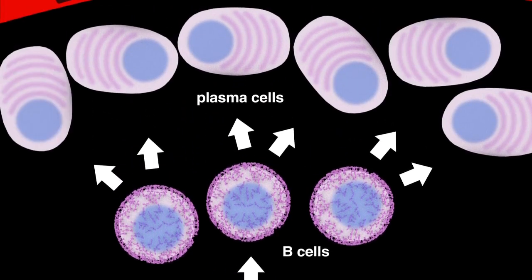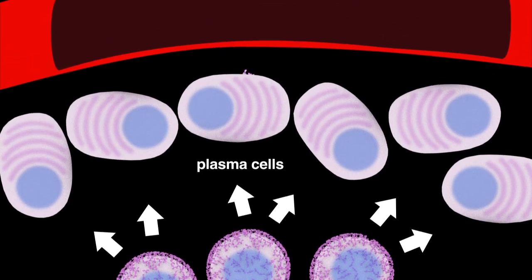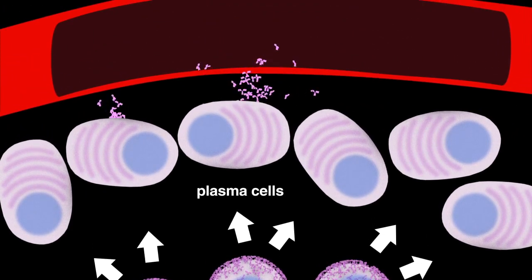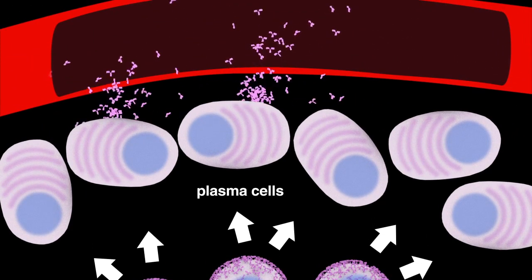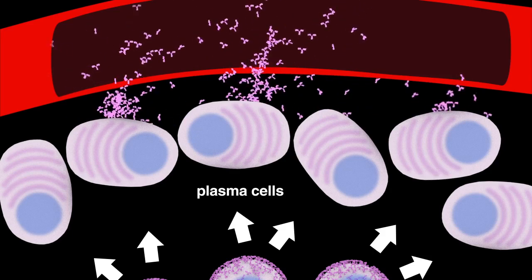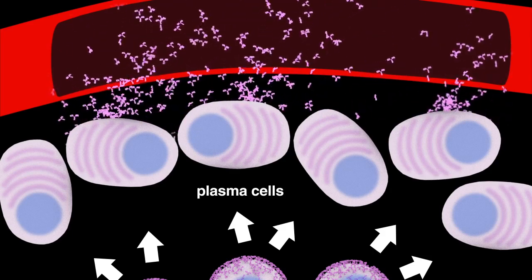Differentiated B-cells or plasma cells in turn produce and secrete large amounts of their respective antibody, which is released into the bloodstream to aid in the finding and targeting of additional pathogens of the same type.